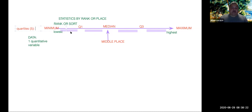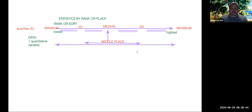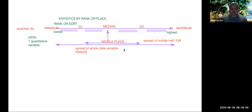Once we have identified locations in the data starting from the middle, we describe something called spread — the variations we see in the data. There are two measures of spread around the middle place: the middle half and the whole data set. The spread of the middle half is referred to as the interquartile range, while the spread of the whole data set is referred to as the range. The range is the maximum minus the minimum, and the interquartile range is defined as quartile three minus quartile one.